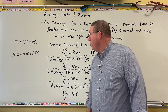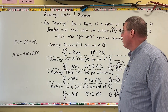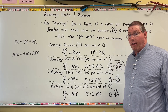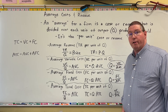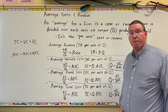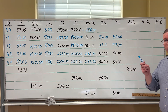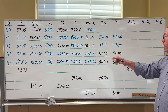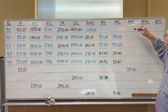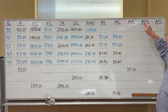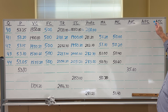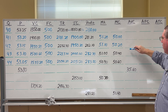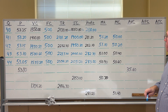Now we're going to grab a calculator and go over to the table to complete the first five rows for average variable cost, average fixed cost, and average total cost.